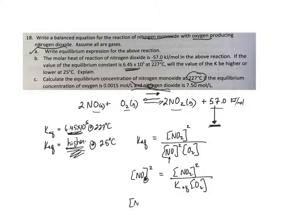So this one is equal to nitrogen dioxide, they have a 7.5, I have to square that over the equilibrium constant 6.45 times 10 to the fifth and then O2 is 0.0015.